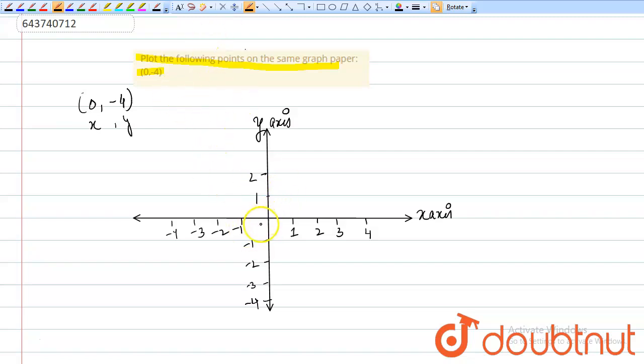I'm just explaining the graph. This is the origin of the graph, (0, 0). This is the x-axis, this is the negative x-axis, and this is the y-axis, and this is the negative y-axis. Now what we have to do is plot these points.